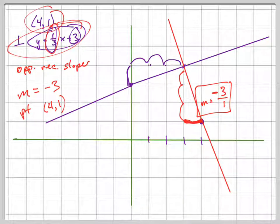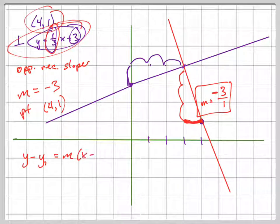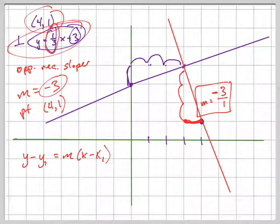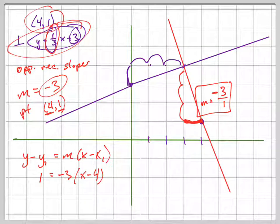Yep, the point-slope form. Remember this: y minus y₁ equals m times (x minus x₁). So we're literally plugging in - there's your m, there's your x₁, and there's your y₁. So x₁ is 4, y₁ is 1, m is -3, and just plug the rest of it in. There's your equation.